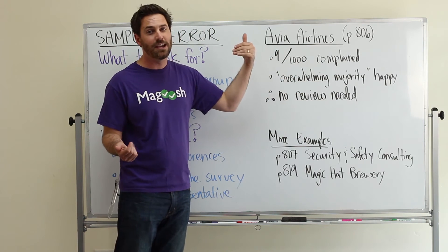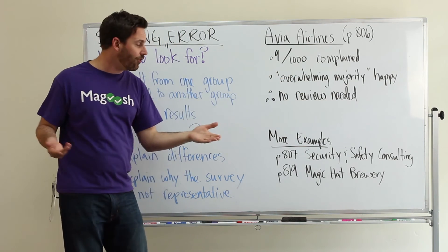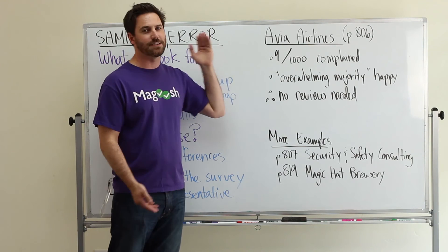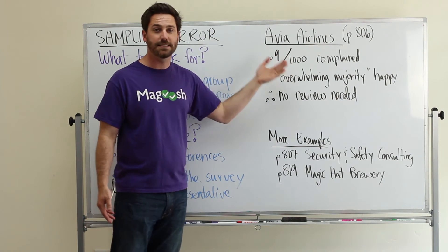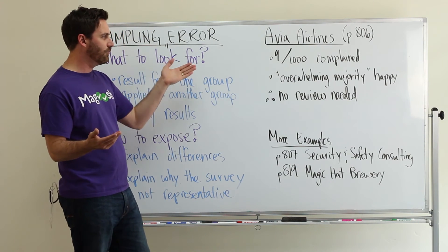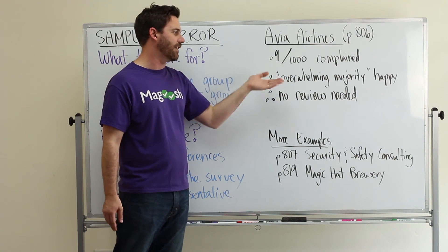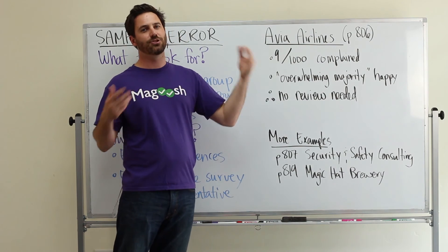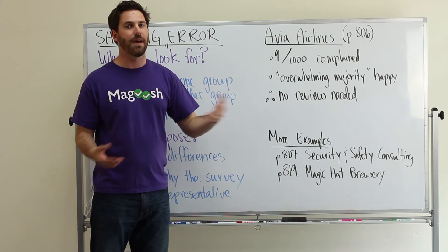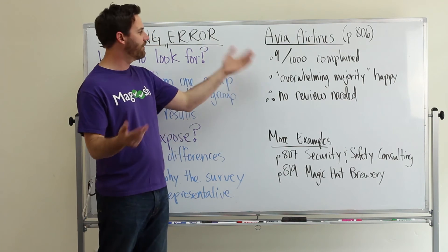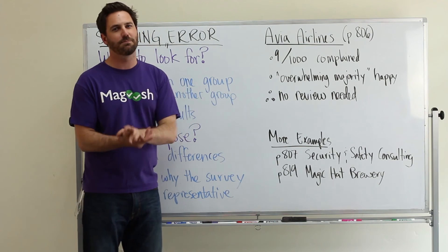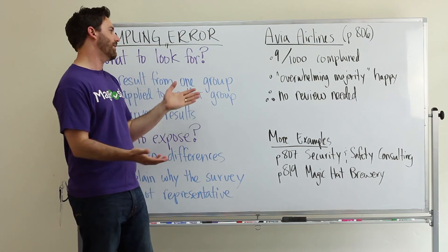Were some of them overwhelmingly happy? Were some of them just neutral? There's a lot of information that's lost in this statistic, and we don't really know what it represents without actually surveying everyone to find out how they feel about the baggage handling services. They haven't surveyed everyone — they're just looking at the nine out of a thousand who complained, and there may be more people who are upset who just didn't mention it.